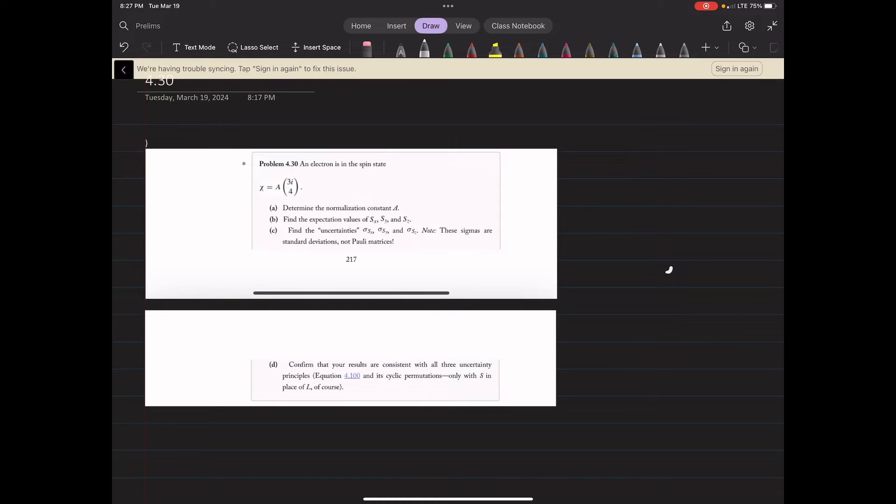Okay, so this is problem 4.30 out of Griffith's quantum mechanics and we're given an electron in a spin state. We want to determine the normalization constant, find the expectation values of our spin, find the uncertainties, and then confirm our results with the uncertainty principle.